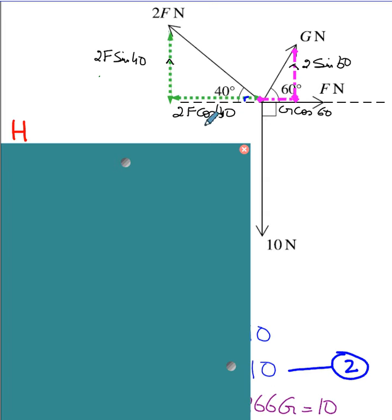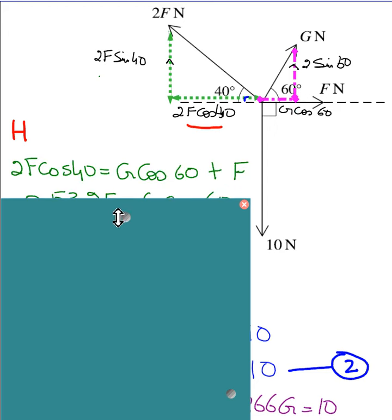You can see I have written here 2F cos 40, 2F sin 40. This purple one which is the component of G Newton force is G cos 60 and G sin 60. This F Newton force is in the X direction horizontally, so there is no Y component of it. Similarly for 10 Newton force there is no X component, only a vertical component. Because forces are in equilibrium, this left-hand side force 2F cos 40 will be equal to G cos 60 and F Newton. So you will get one equation from here.